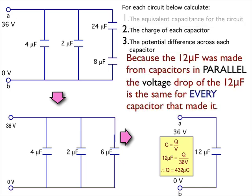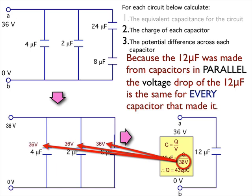This 12 microfarad capacitor was made up of the 4, the 2, and the 6, which are all in parallel. And one of the things you had to know early on was that in parallel, the voltage stays the same. What I'm going to do is I know that the 12 microfarad capacitor drops 36 volts, so I'm going to carry 36 volts because they're in parallel.